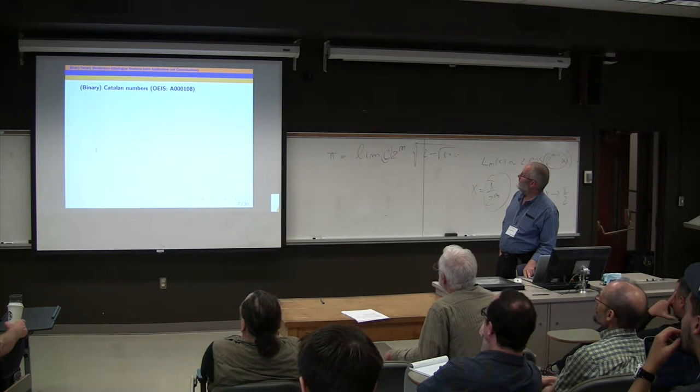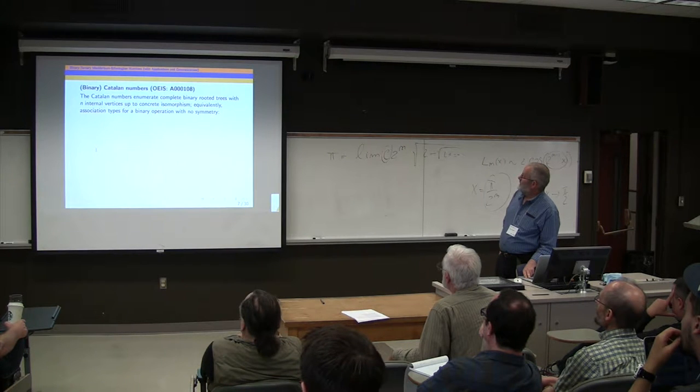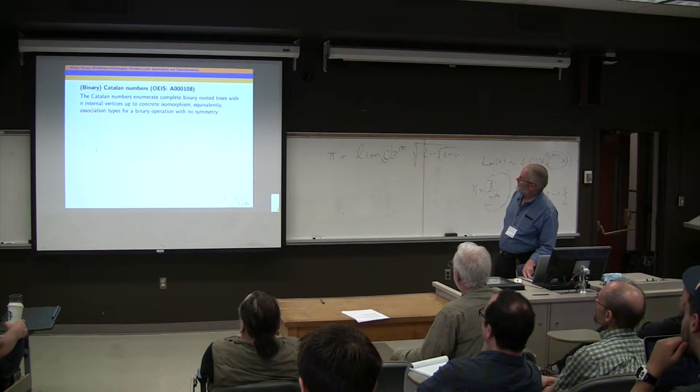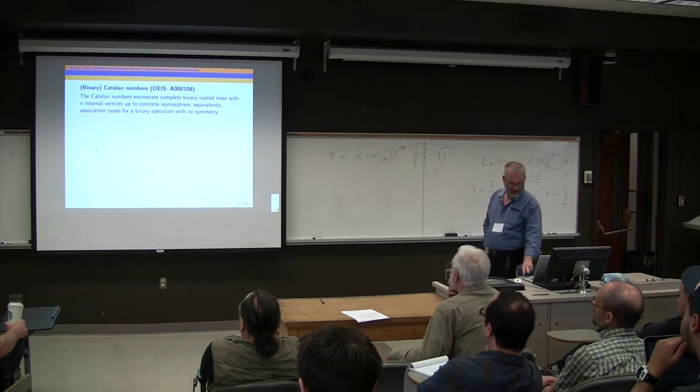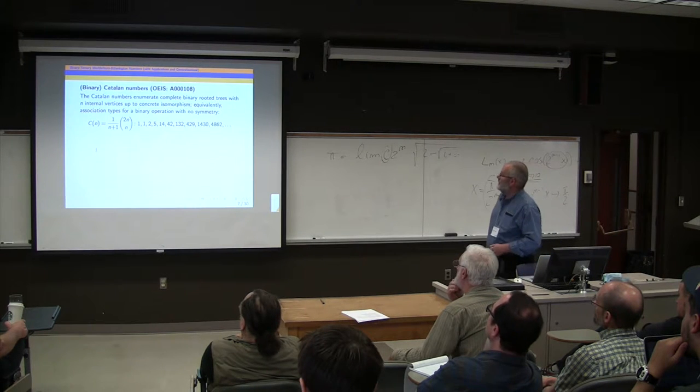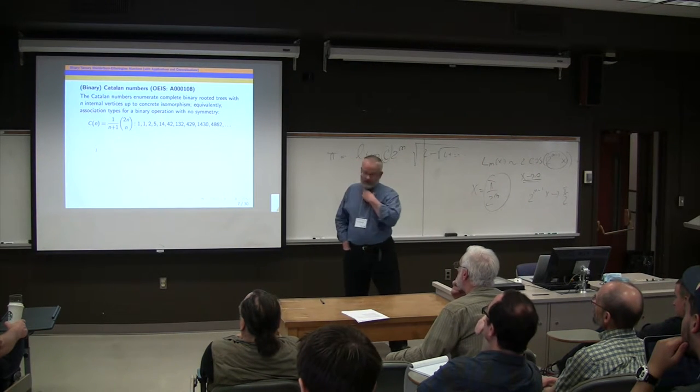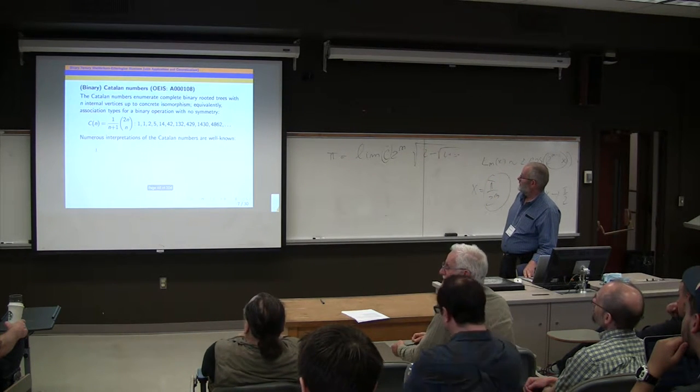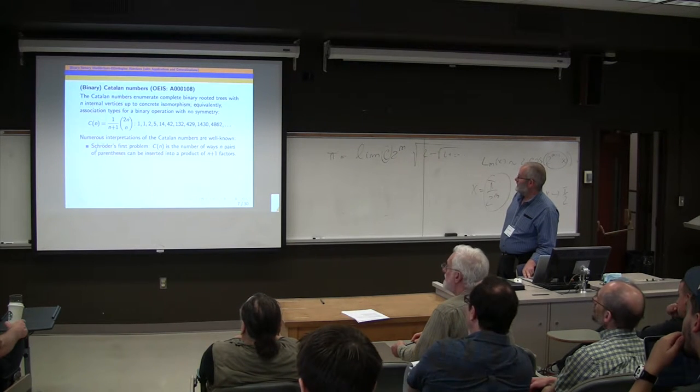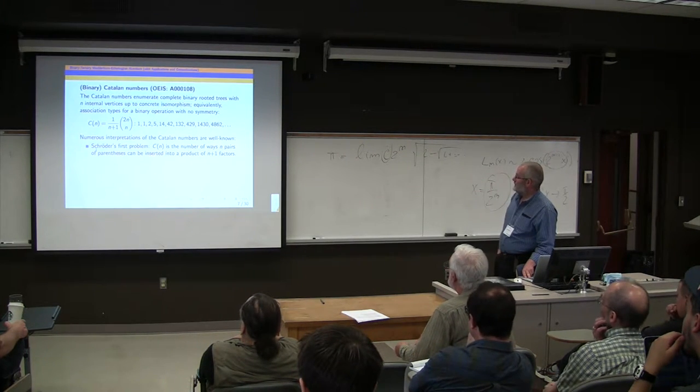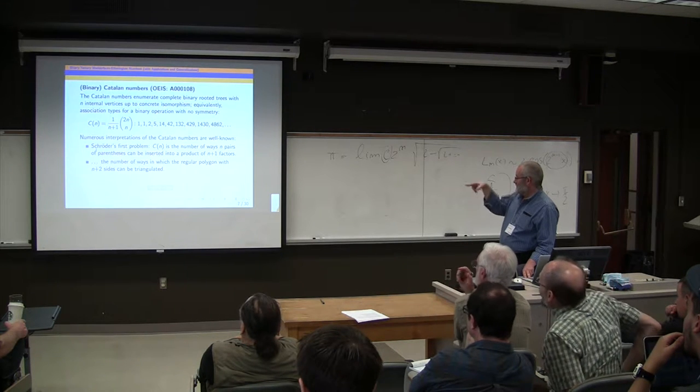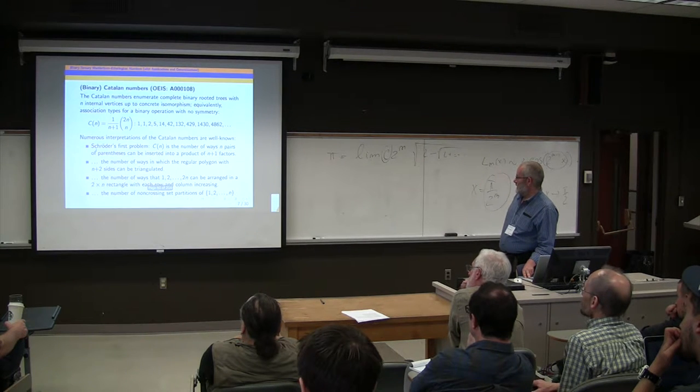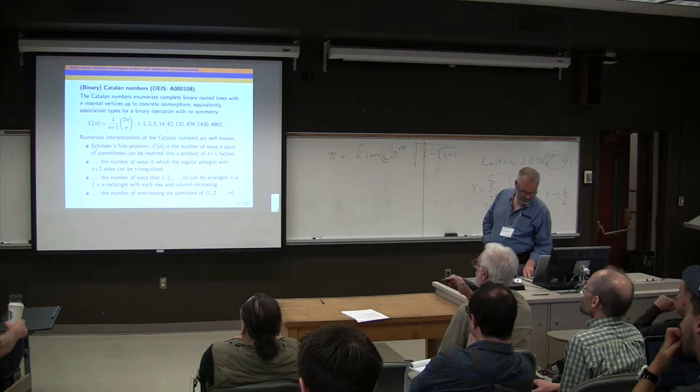Quick review of binary Catalan numbers. They enumerate complete binary rooted trees with n internal vertices up to concrete isomorphism. Equivalently, association types for a binary operation with no symmetry. There's the formula. Notice n here is number of internal vertices. That's the standard way to write Catalan numbers. And of course there are many well-known interpretations. They solve Schröder's first problem. They give you triangulations of polygons, some Young diagrams, and some separations. All that's pretty well-known.